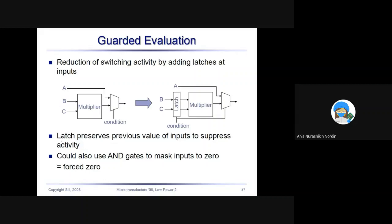The latch preserves the previous value of the input to suppress activity. If you do it like this, every time that B changes it will go into the multiplier and you have to calculate. But if you put it like this, only when you need the output of the multiplier will this data go in to the multiplier. You could also use AND gates to mask inputs to zero or force zero.